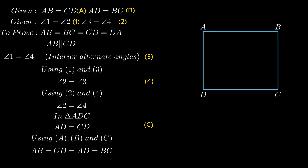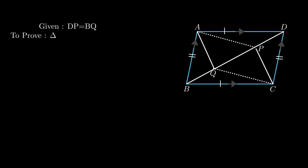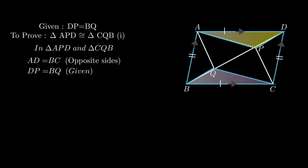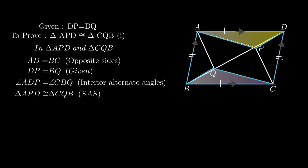The next problem states: ABCD is a parallelogram in which two points P and Q are taken on diagonal BD such that DP = BQ. For the first part, we need to prove triangle APD is congruent to triangle CQB. In triangle APD and triangle CQB: side AD = side BC as opposite sides of a parallelogram are equal; DP = BQ as given; angle ADP = angle CBQ as interior alternate angles are equal. Therefore by the side-angle-side rule, triangle APD is congruent to triangle CQB.